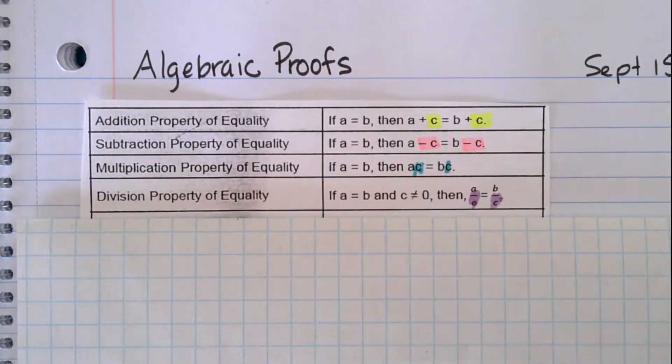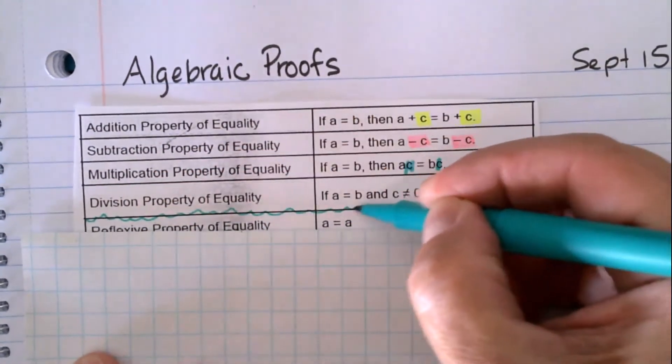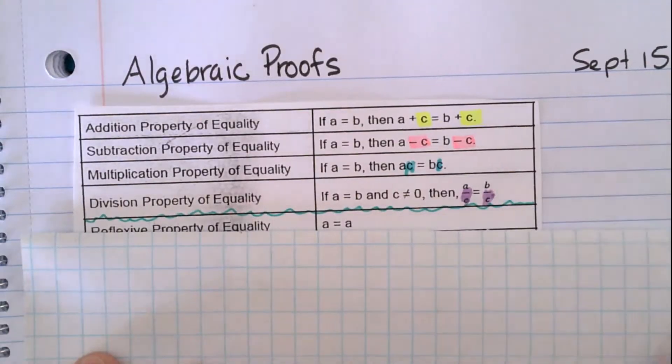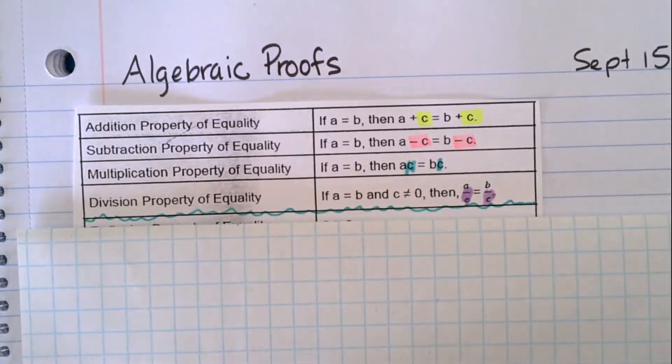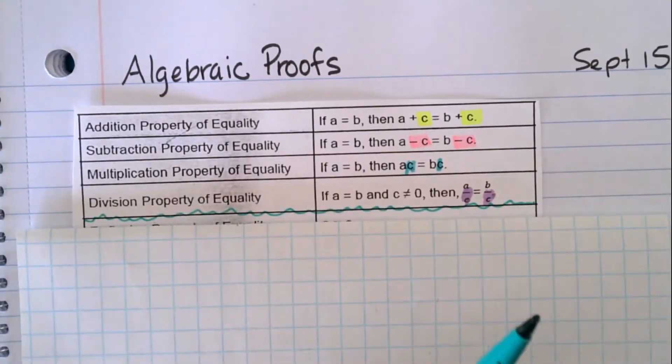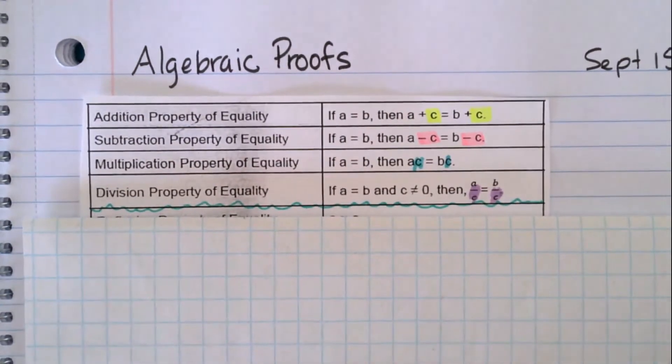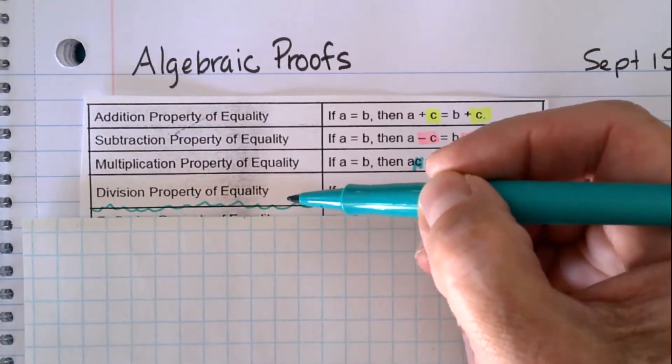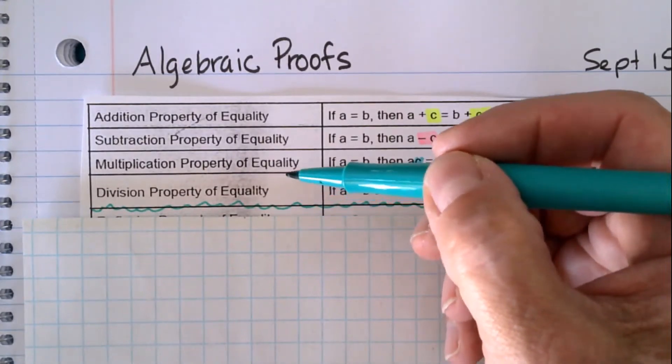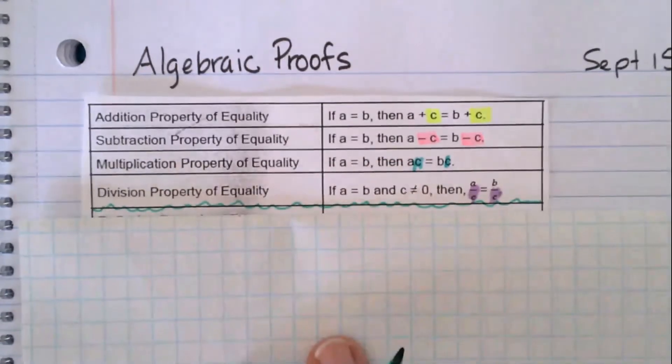So when I say we've been doing this already, it's because that's how we've been solving equations. You guys have been writing algebra proofs since the first day we started when we started doing equations. You just didn't write them the same way we're going to write them today. So we're just going to change the format of how we do it. And you're going to need to know these phrases here because when we do a proof, you have to state why you're doing what you're doing and it's going to be these properties.